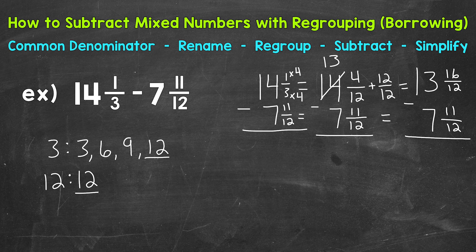Let's bring the subtraction sign over. So we have 13 and 16/12 minus 7 and 11/12. Let's subtract the fractions here. So 16/12 minus 11/12. Well, 16 minus 11 is 5. And we keep our denominator of 12 the same.